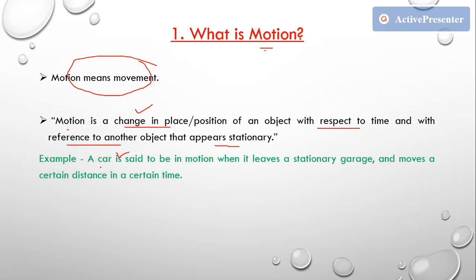For example, a car is leaving the garage — the car is traveling a certain distance in a certain time, which means the car is in motion. Here, the car is Object 1 and the stationary garage is Object 2. According to the definition of motion, one object is stationary and with reference to that object, another object is moving.